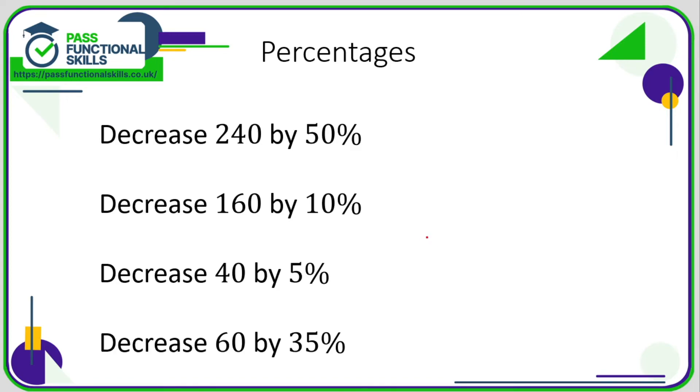Decreasing by a percentage is identical to what we've just done, except instead of adding it on you take it away. What is 50% of 240? It's 120. So here we're doing 240 take away 120, which is 120.